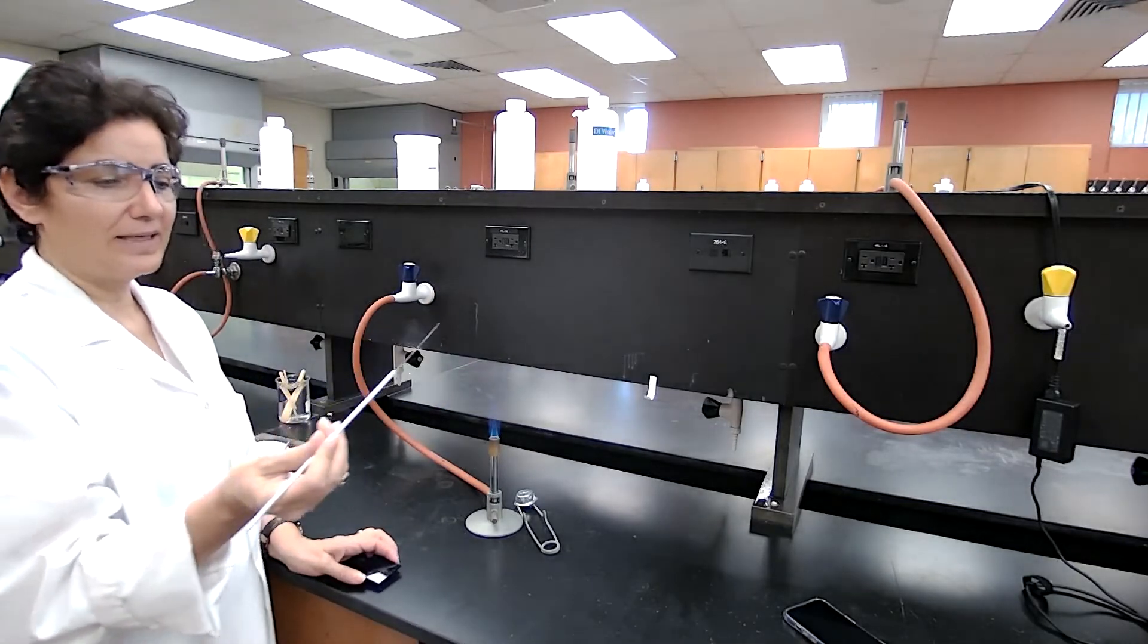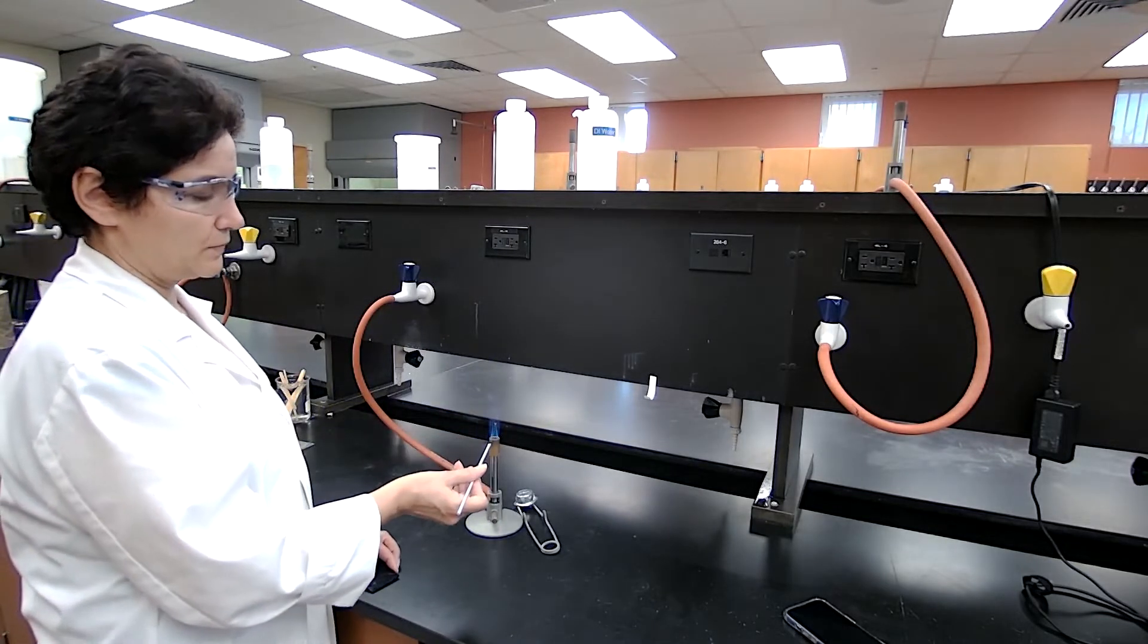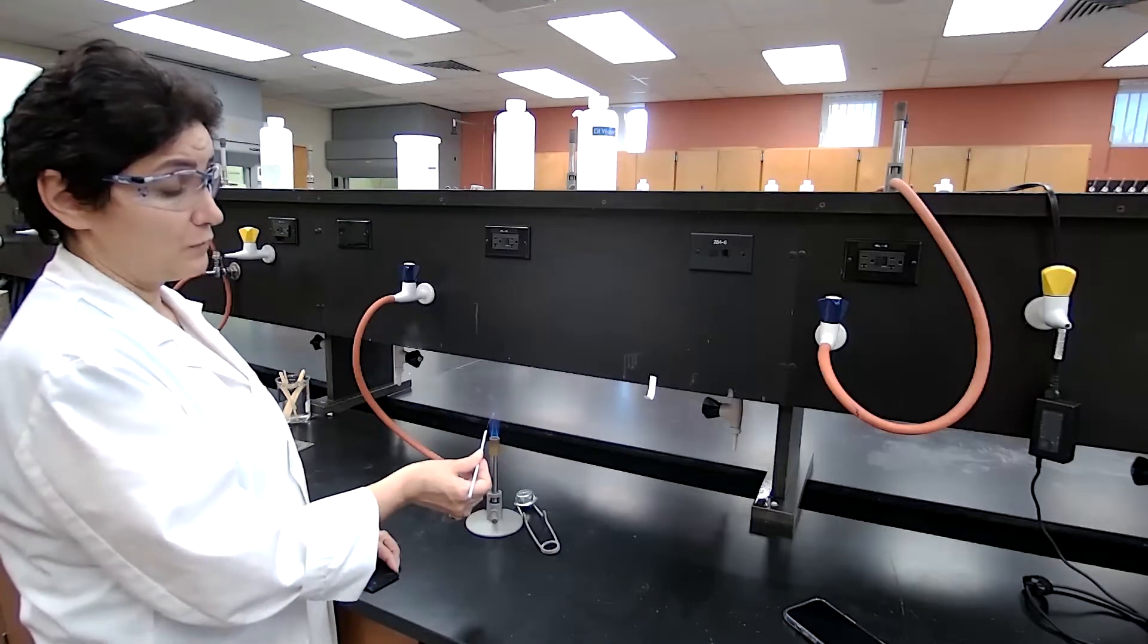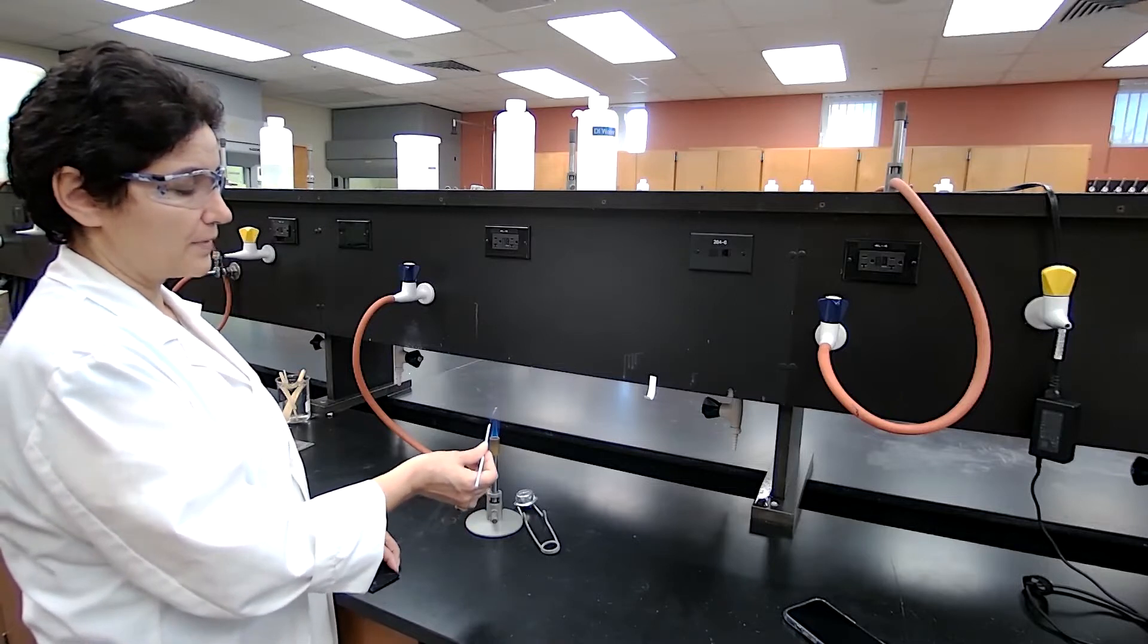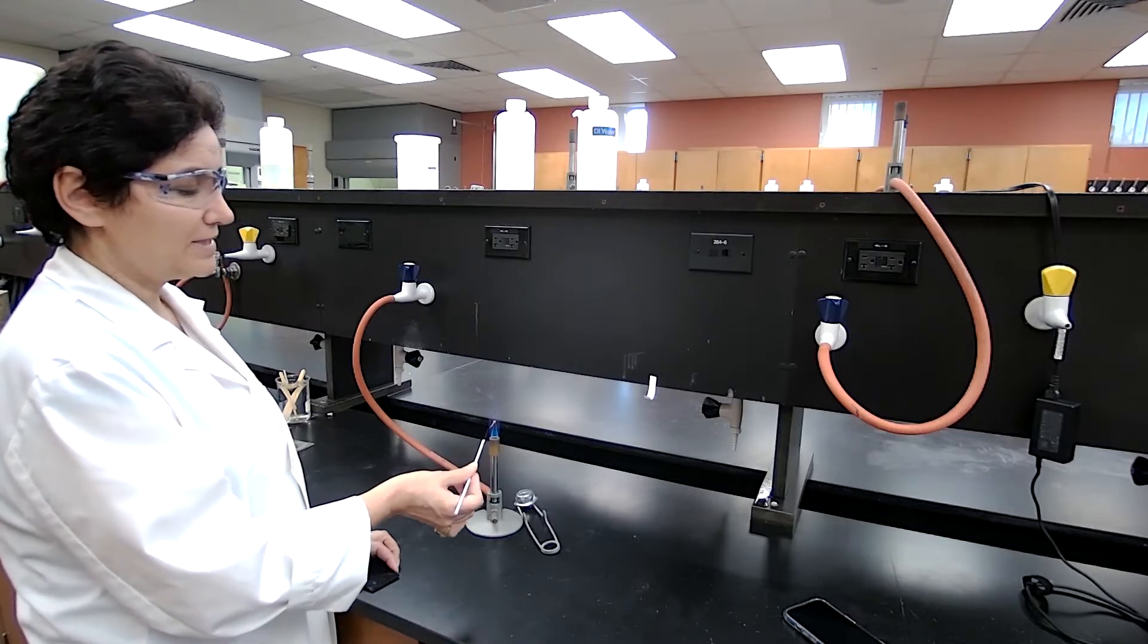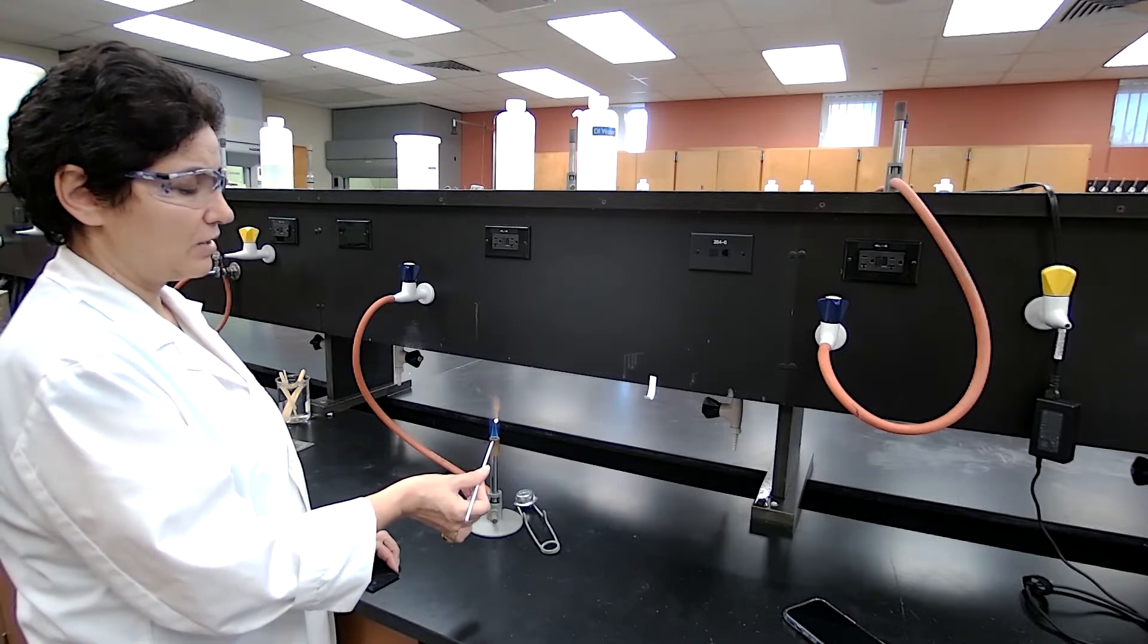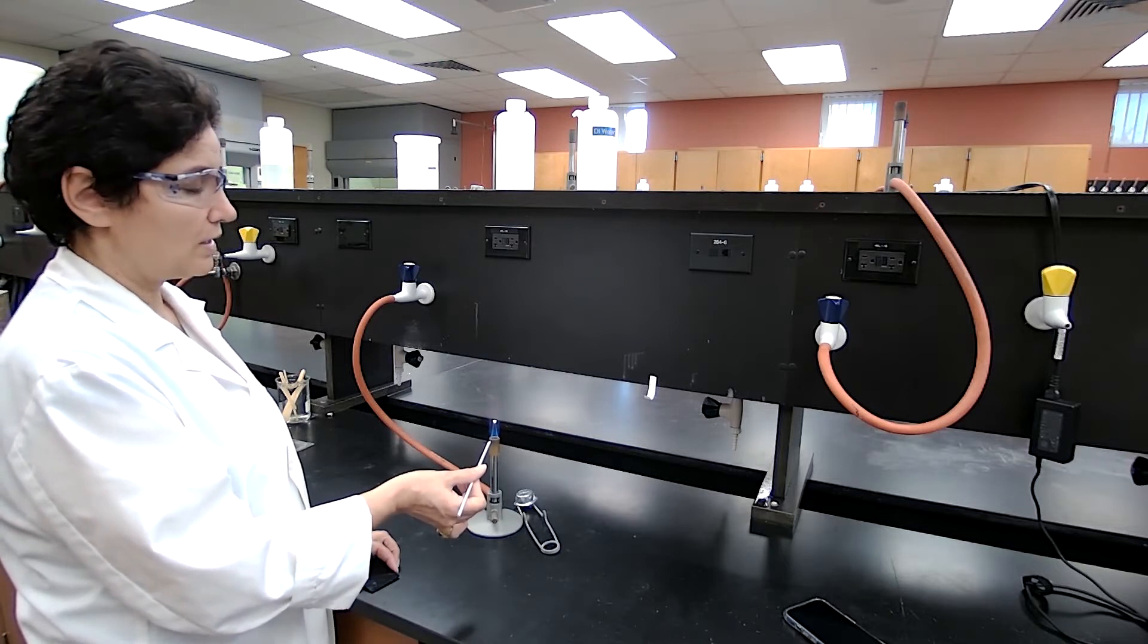First step is to clean the chrome wire. We just keep it in a flame. This one is brand new, so it doesn't really need much cleaning. But if it was used before, it might have some residue of other ions that needed to be heated up for five to fifteen minutes on the flame. It doesn't give any color, so it's safe for me to use it now.